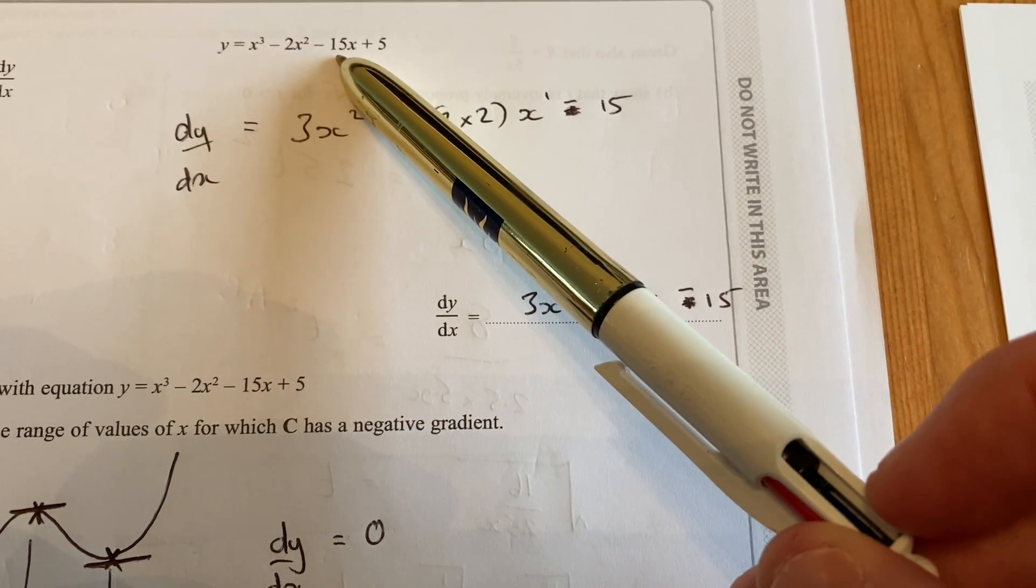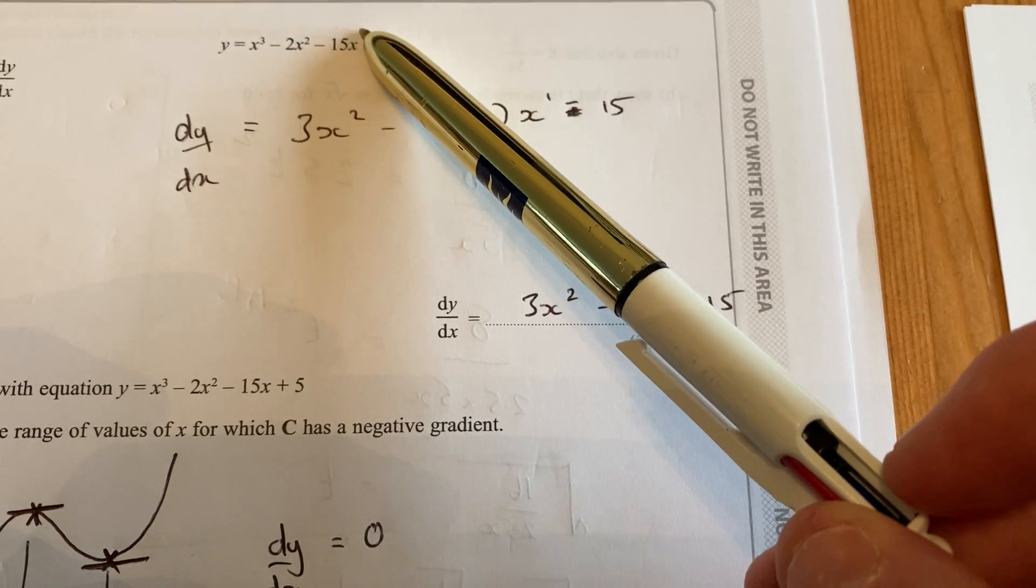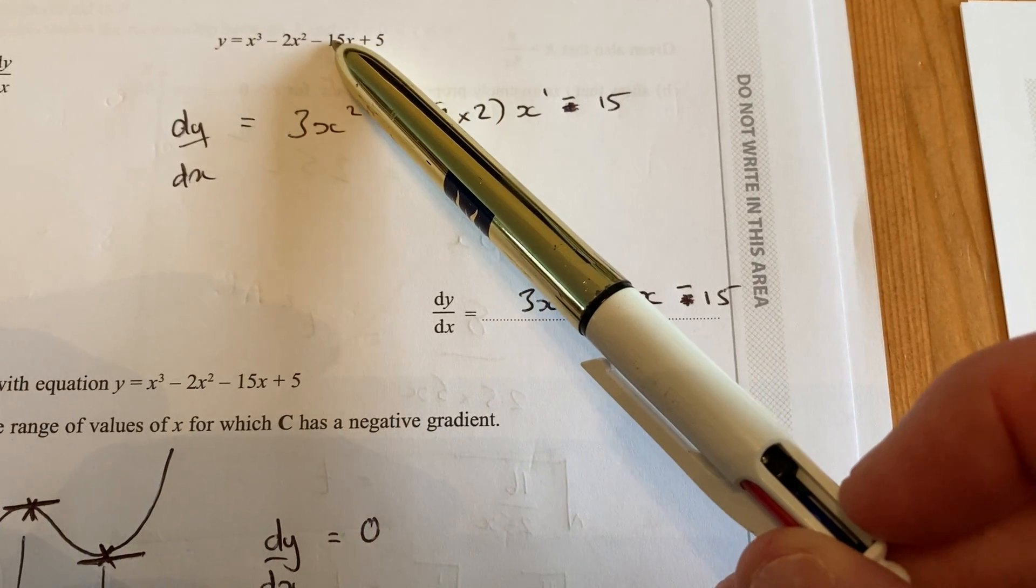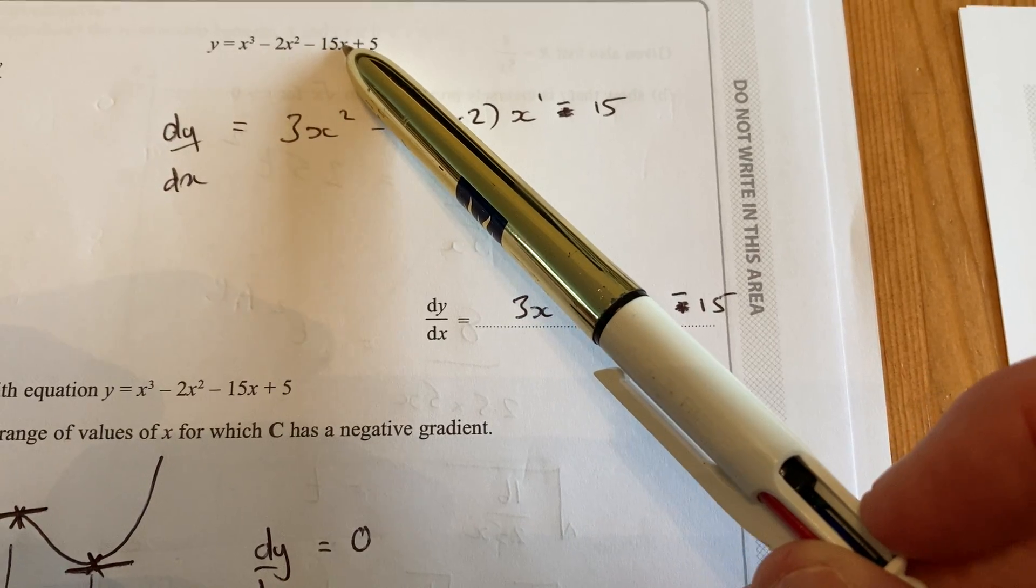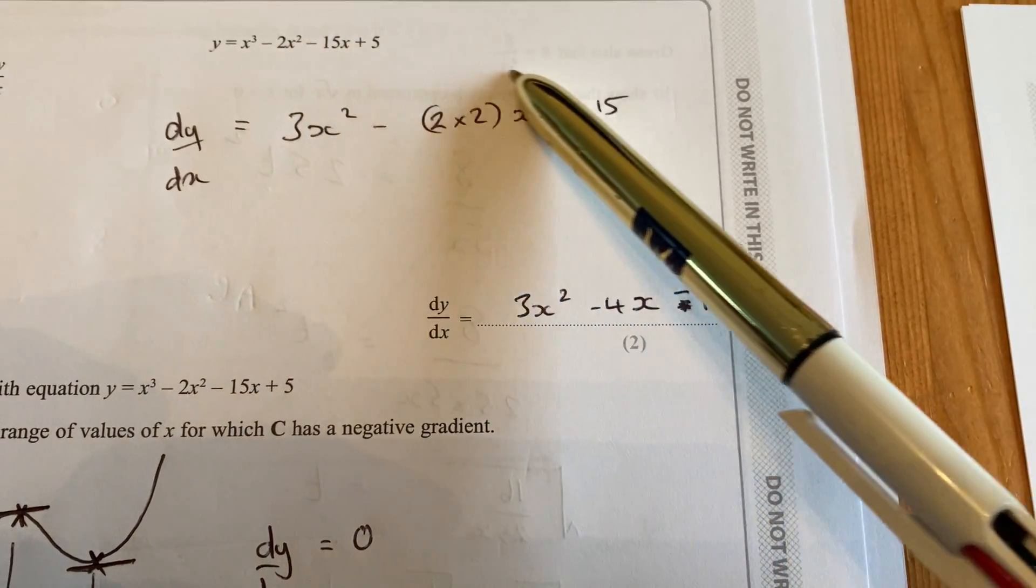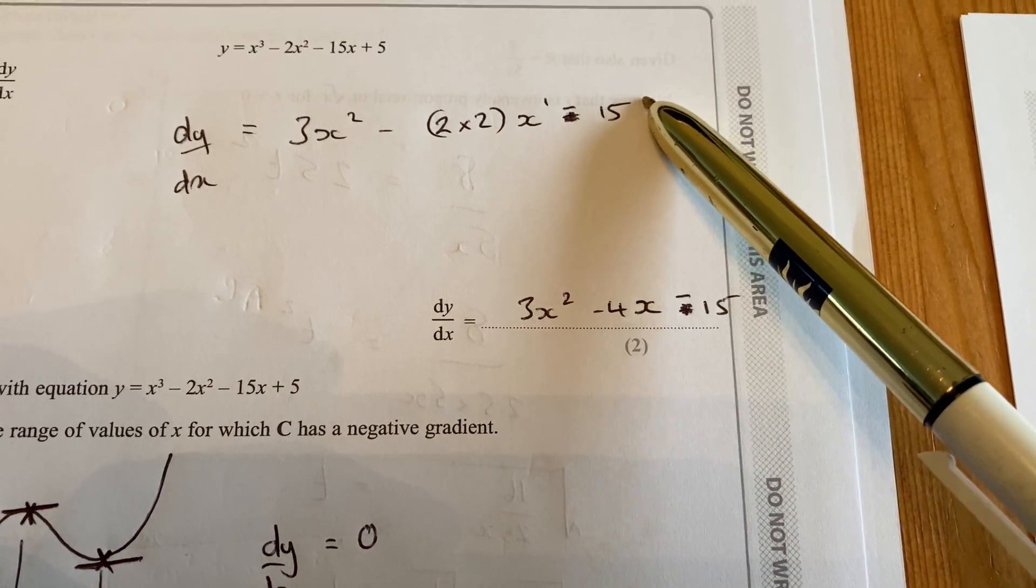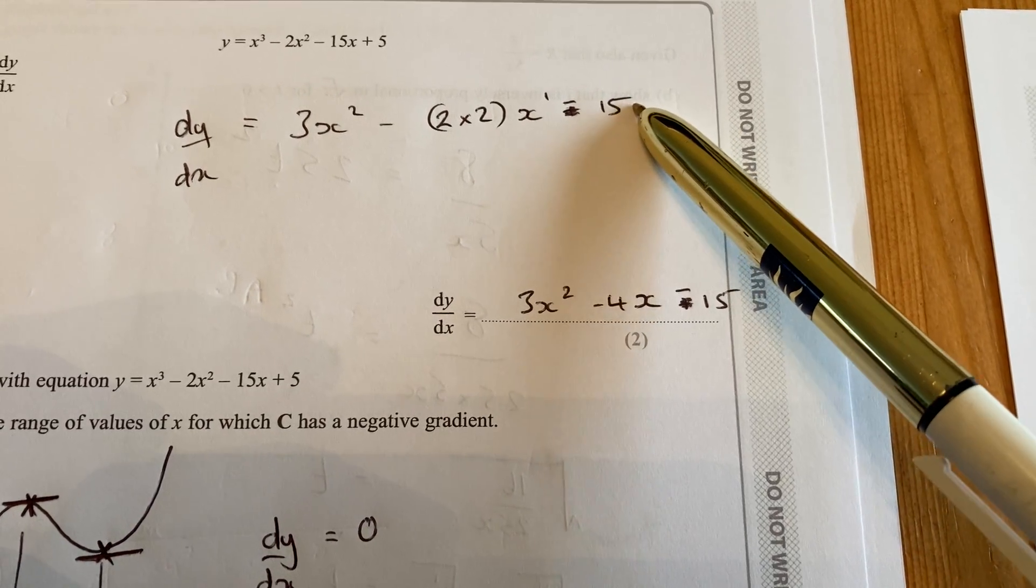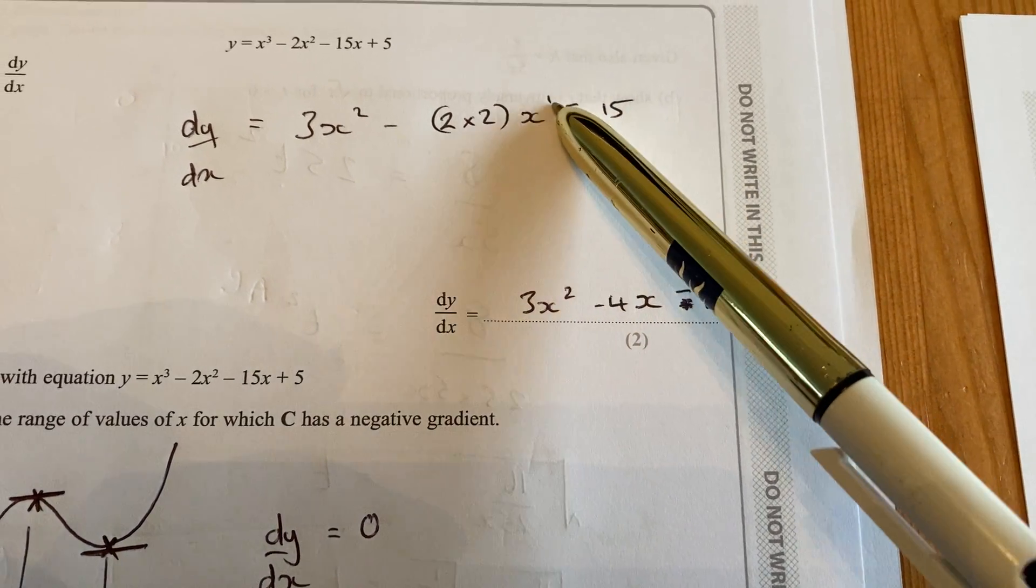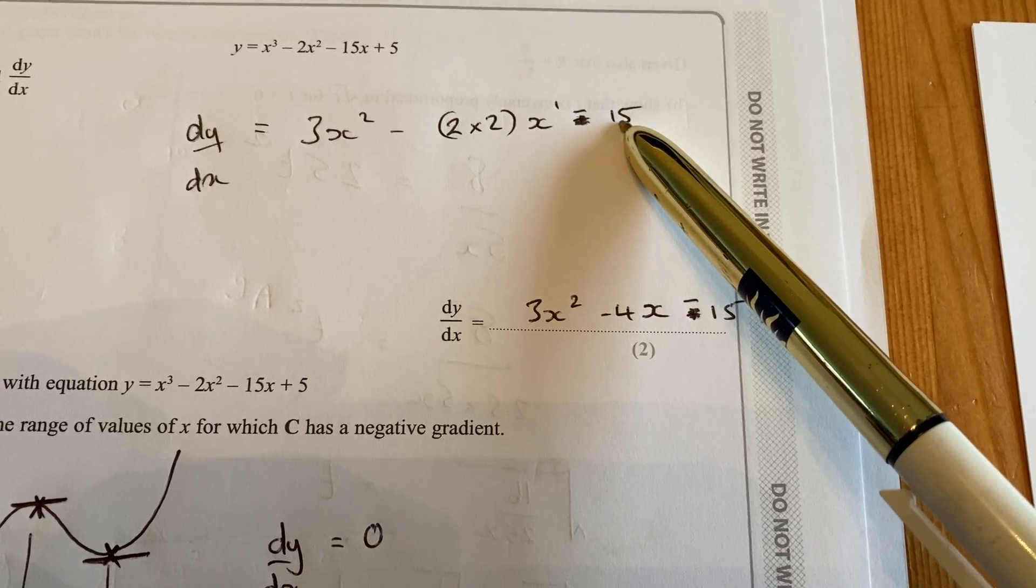And then minus 15x with a little 1 up there, we don't bother writing it, it comes down and multiplies the 15 to make 15x to the power 0. But x to the power 0 is just 1, because anything to the power of 0 is 1,